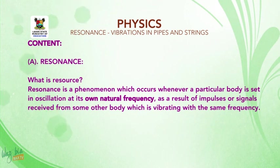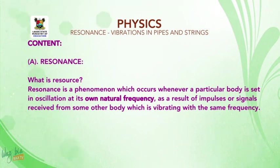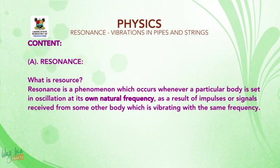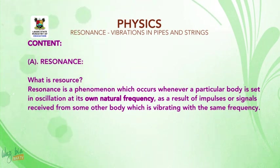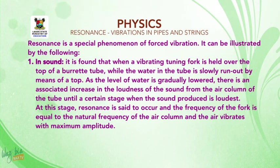Let's start with resonance. What is resonance? Resonance is a phenomenon which occurs whenever a particular body is set in oscillation at its own natural frequency, as a result of impulses or signals received from some other body which is vibrating with the same frequency. Resonance is a special phenomenon of forced vibration.